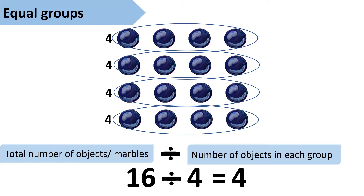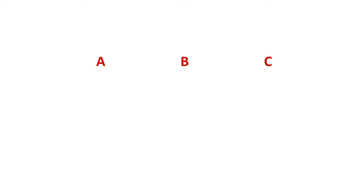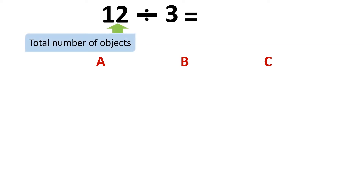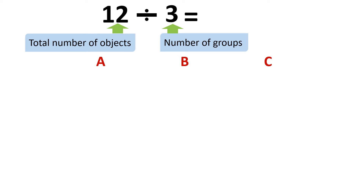Look at this number sentence. We have 12 objects and we are going to divide those into three groups to find out how many objects we have in each group. Here we know the number of groups but we don't know how many objects we have in each group. Let's suppose we have 12 apples.